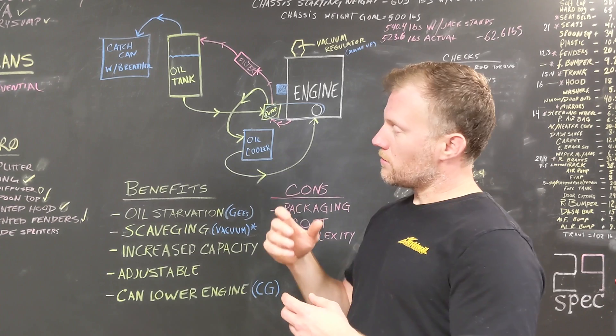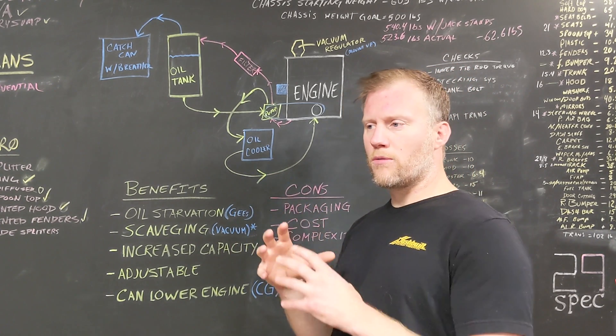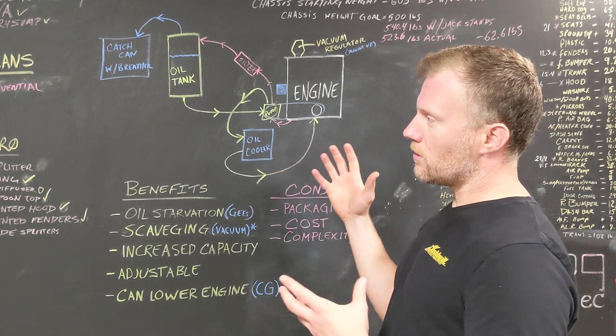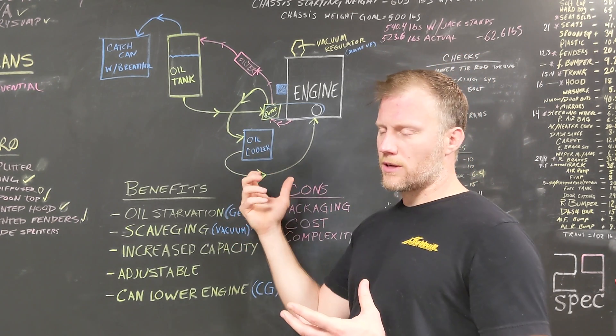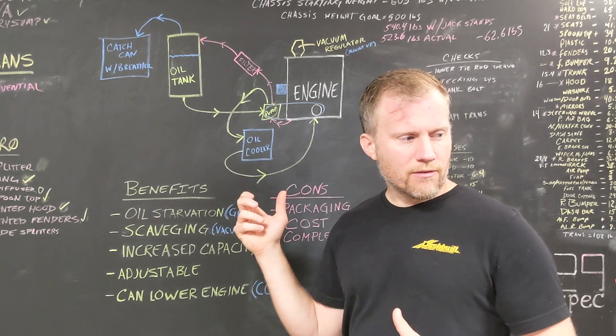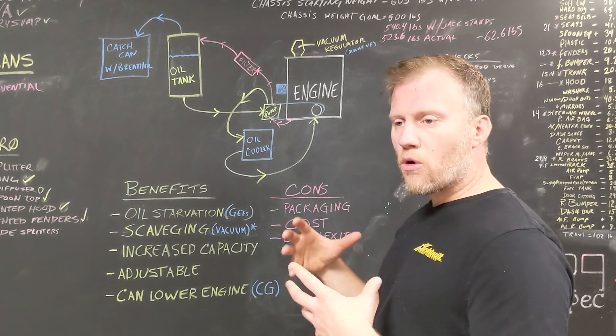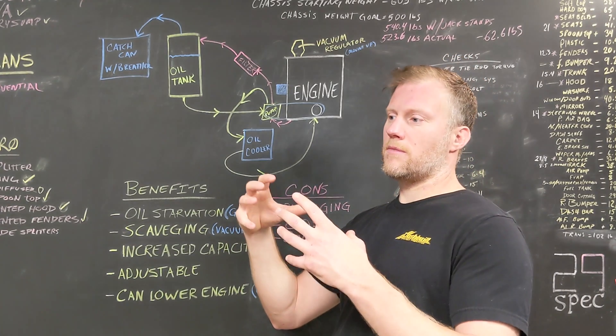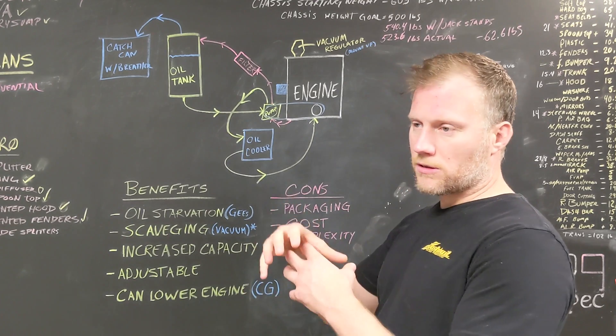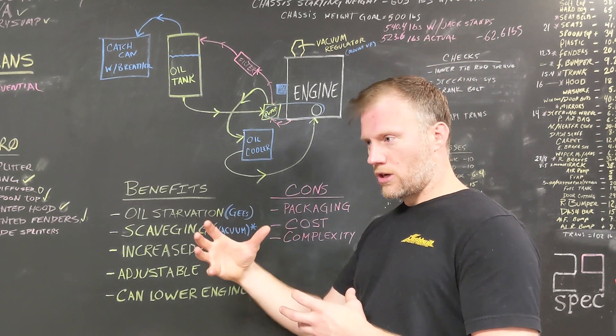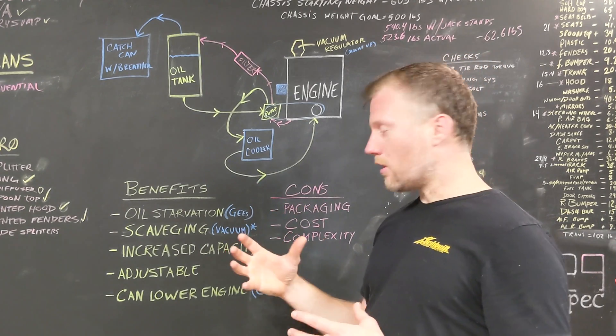So increased capacity too. I think the stock S2000 holds five quarts of oil. In a dry sump system you can hold, depending on how big your oil tank is, you can hold a lot more. I think I'm holding seven and a half quarts now with my total system. So more oil means you won't break down the oil as fast because there's more of it. And it's also got a little bit more thermal capacity. So everything else kept the same, your oil temperature should be lower as well.